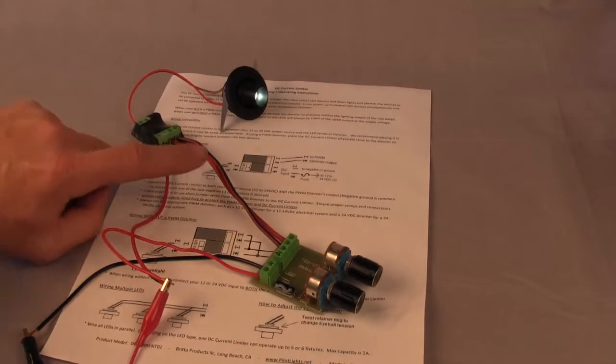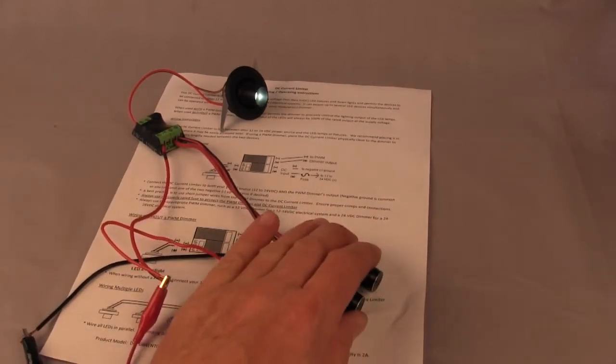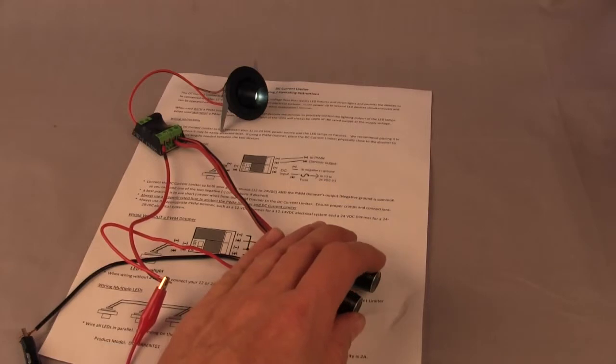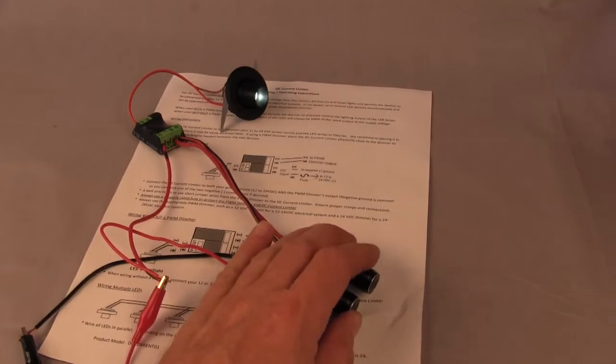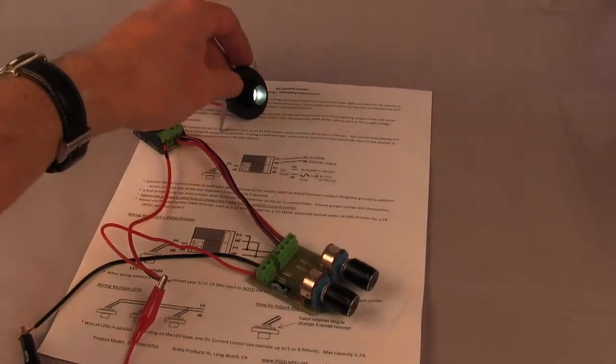In this case, we have a dimmer connected. The dimmer allows you to have a linear control over the output of the light. If you see any strobing here, it's simply due to the video effect. It's not visible to the naked eye, and you have a nice linear control over the output of the lamp.